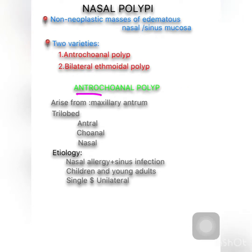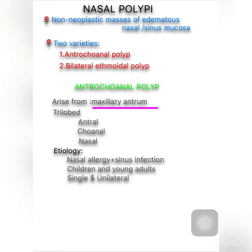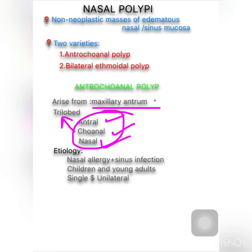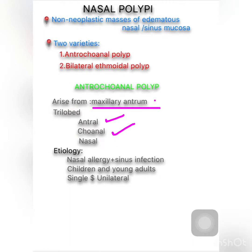Antrochoanal polyp has two words: antro and choanal. Antro means maxillary antrum and choanal means nasopharynx or the posterior nose. So it arises from the maxillary antrum and has three parts: the antrum part, the choanal part, and the nasal part — making it a trilobed polyp.